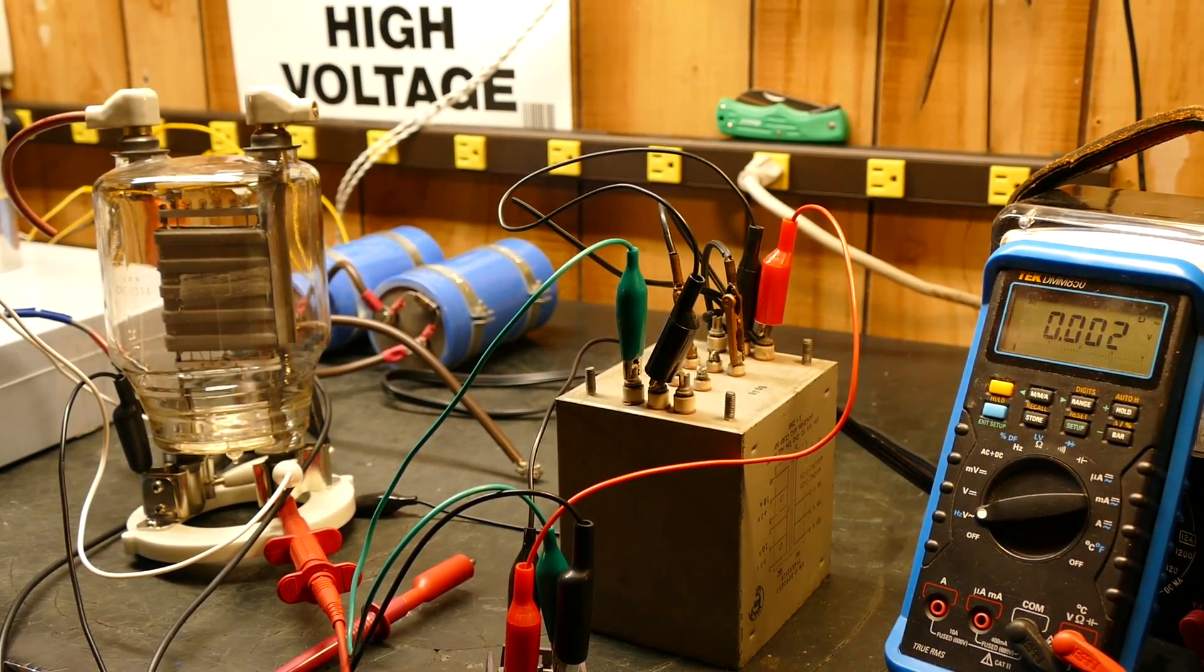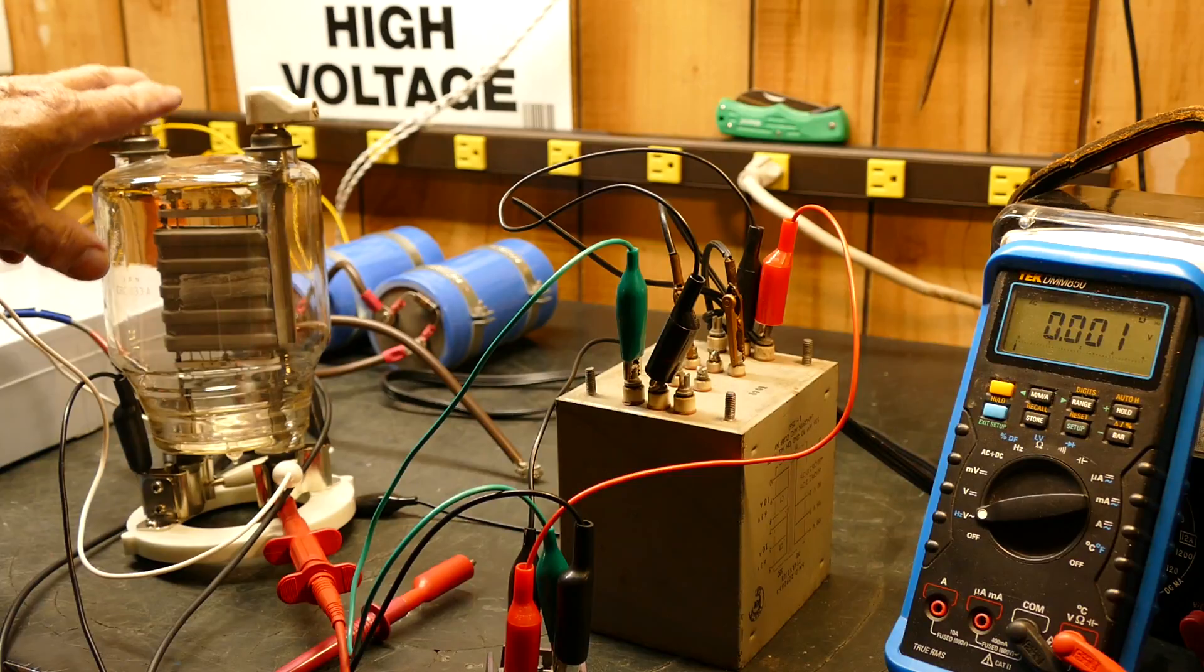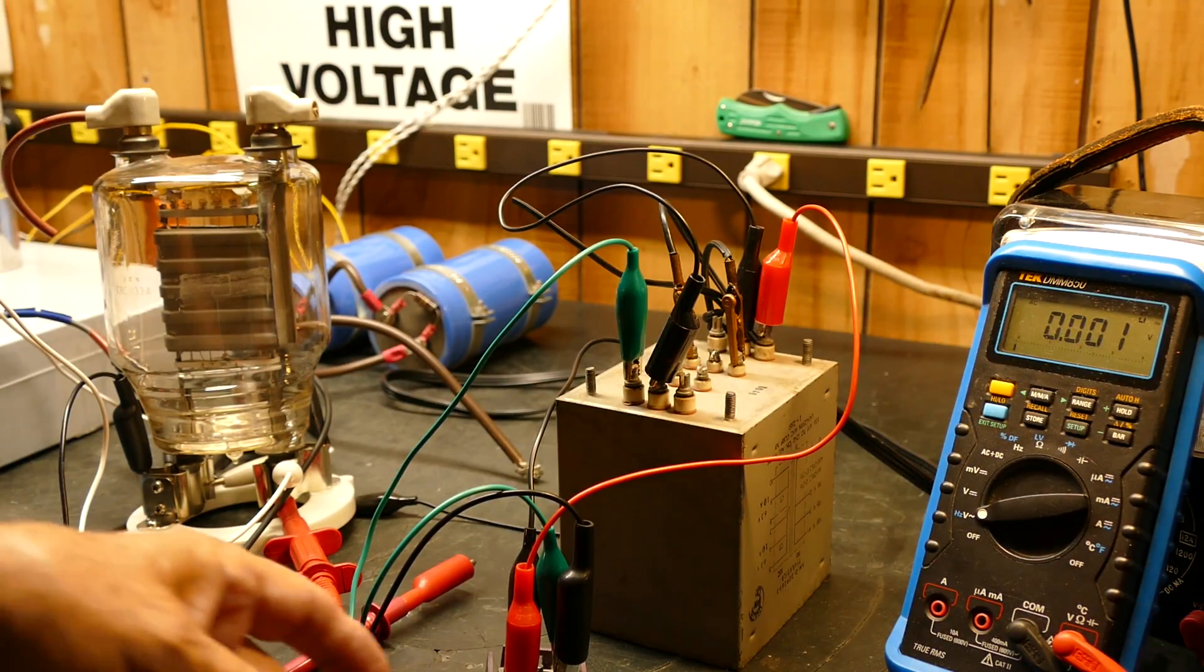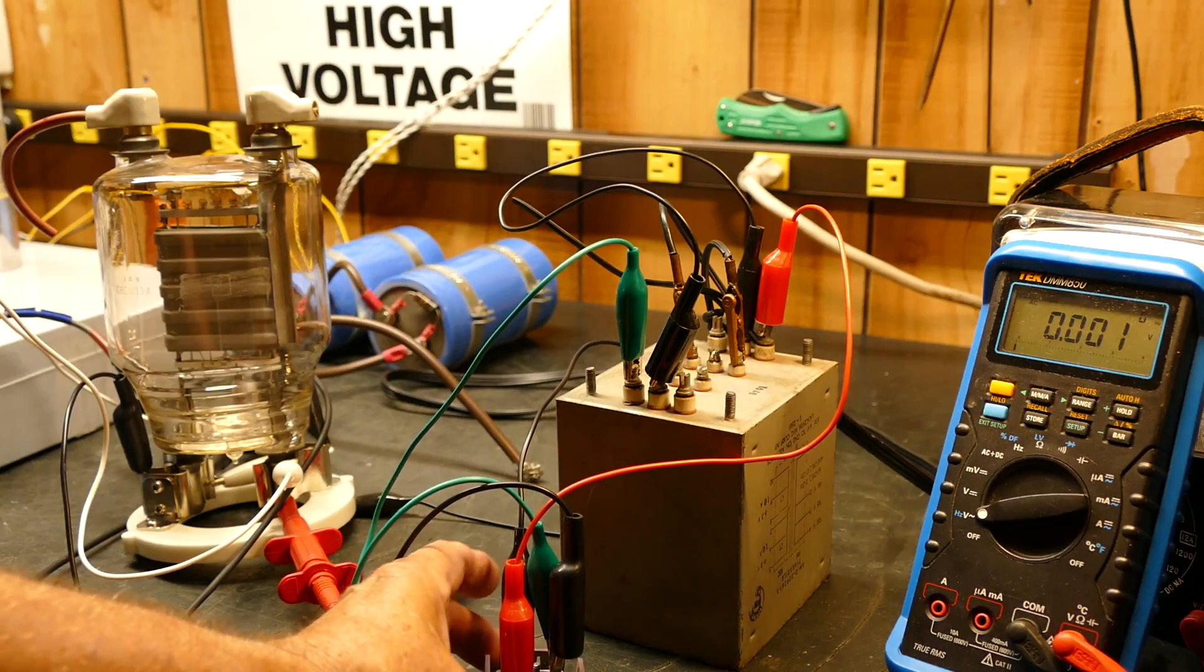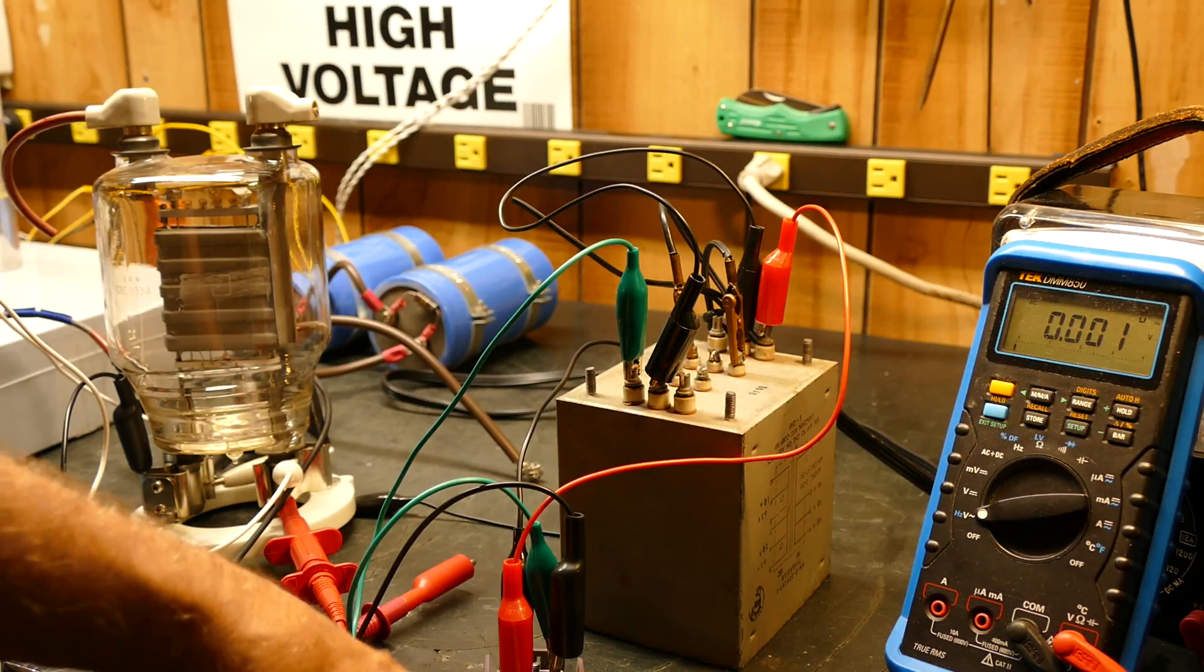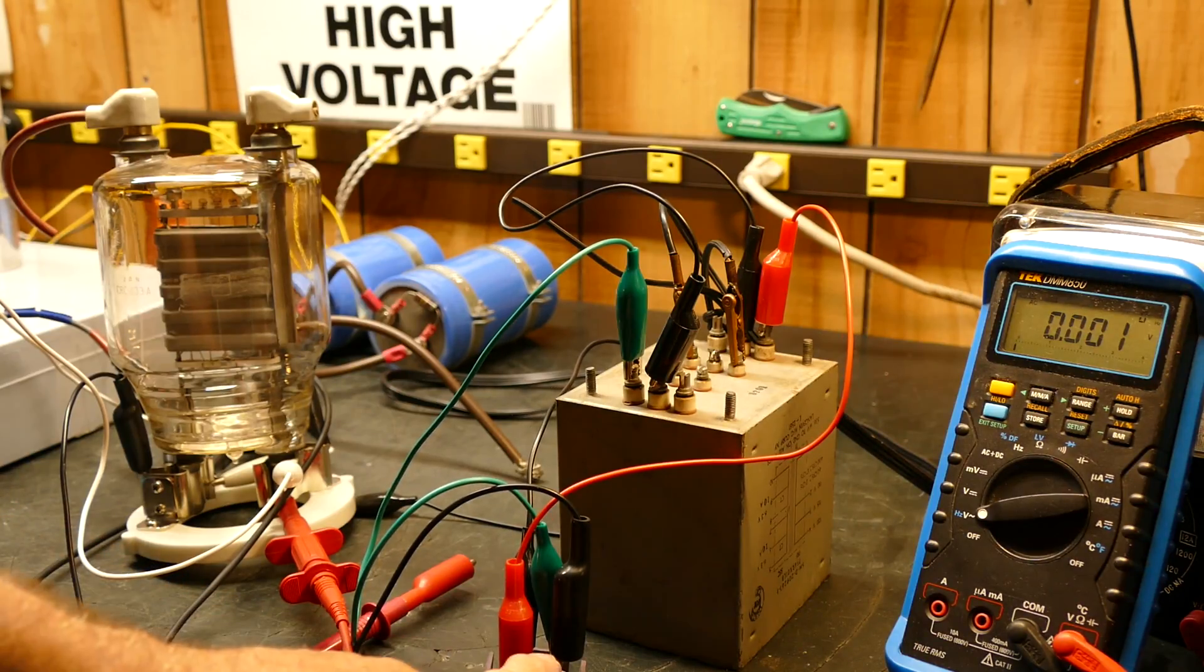Tonight is July 2nd, 2015, and I've been experimenting with the filament supply of this 833 tube. It's going to be quite a challenge. Right now I'm using this little bridge rectifier which gets much too hot. As one gentleman has already commented on YouTube, this one is going to be too small, and I agree.